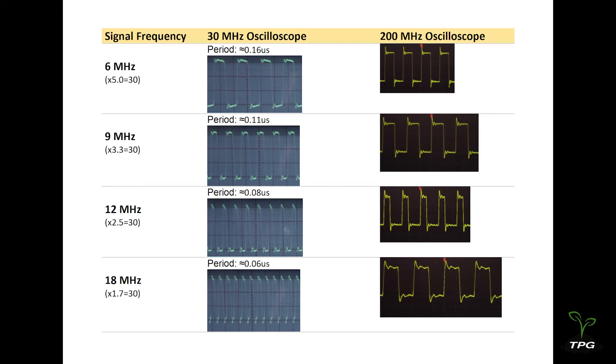For the 18 MHz square wave, the output is distorted and looks more like a sine wave. This distortion is due to the lack of high-frequency harmonics that are filtered out by the oscilloscope's bandwidth limitation.